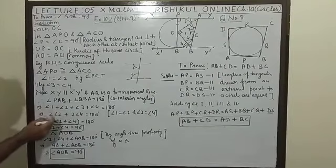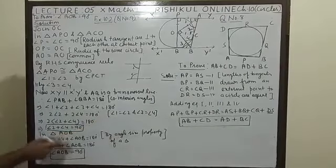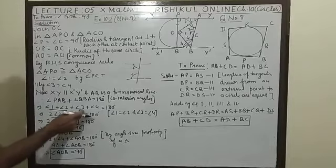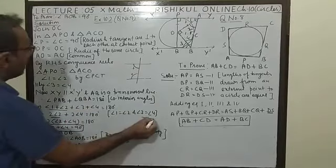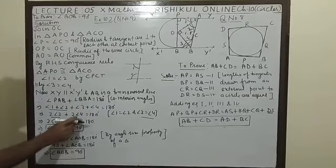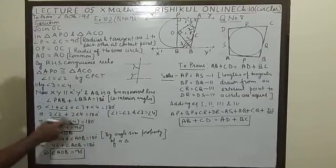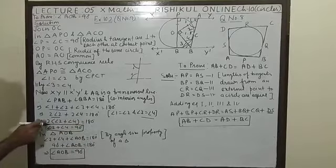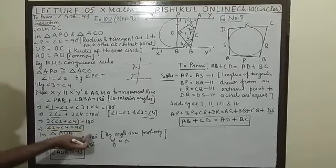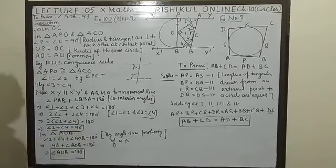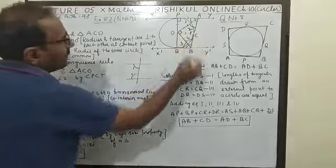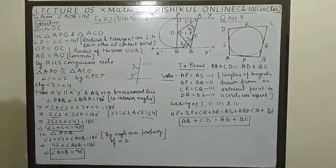This one, you can write 2 because they are equal. So twice of 2. This 3, you can write 4 because they are equal here. And then twice of 4 equal to 180 degree. 2 is common. So 2 plus 4 is left equal to 180 degree. Then this 2, transfer left to right and 180 upon 2, 90. So angle 2 plus 4 equal to 90 degree.